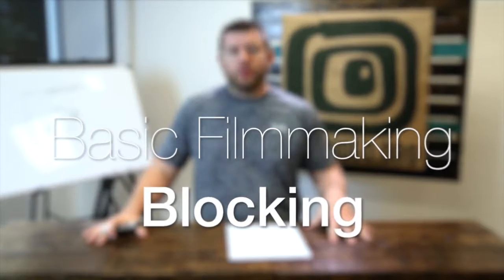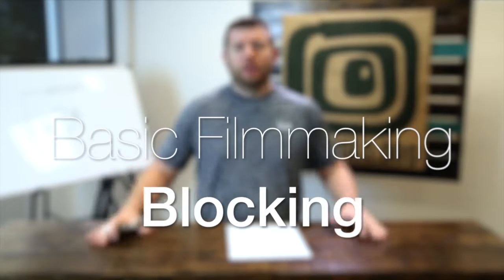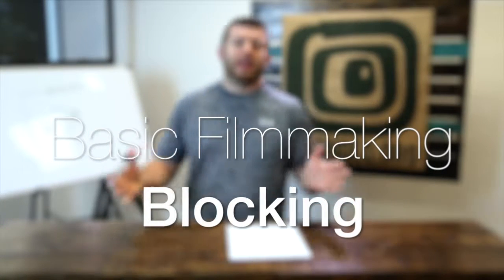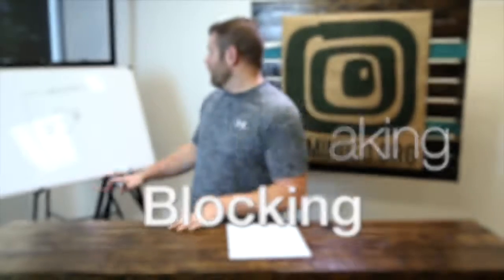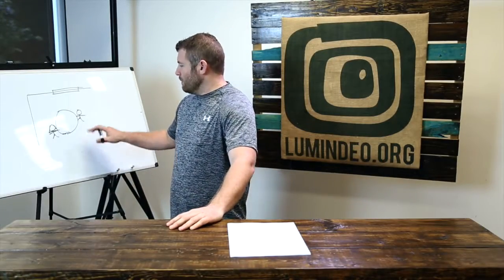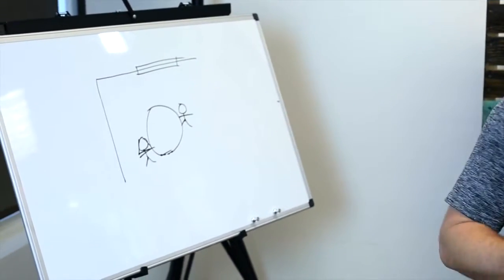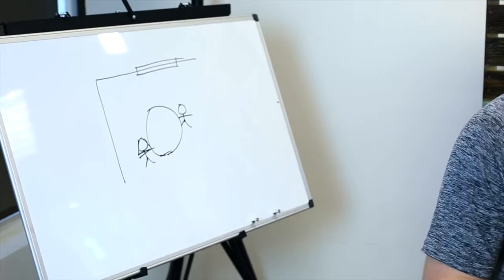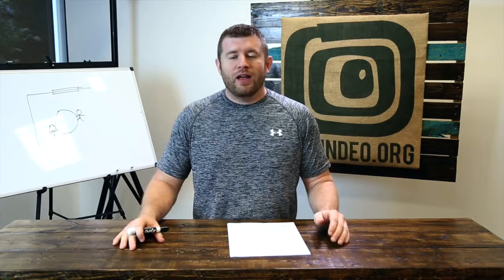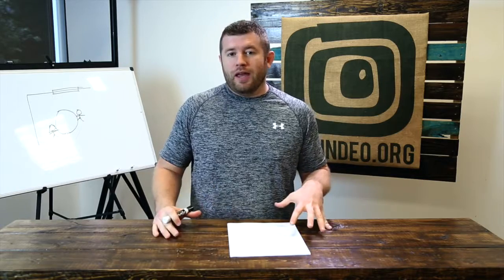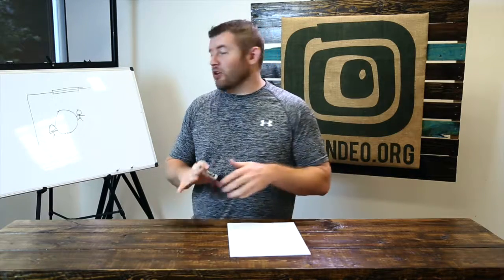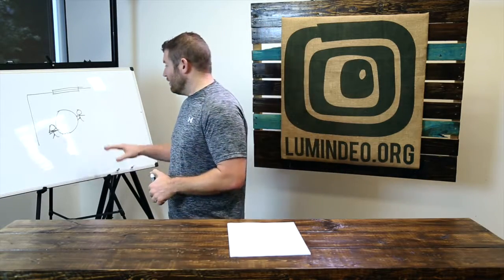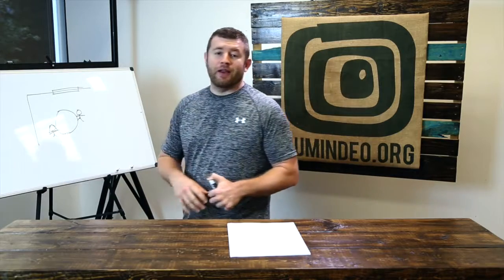You've made it to the set and you're about to film a scene. We're gonna pretend that in the scene you've got our friend Bob here, and Bob is gonna be talking to Mary. You've written it in your script, so here they are. You show up as the director, but now you've got to communicate how this scene is going to work to your actors — an actor playing Bob and an actor playing Mary — and they might not know what you're thinking as the director.